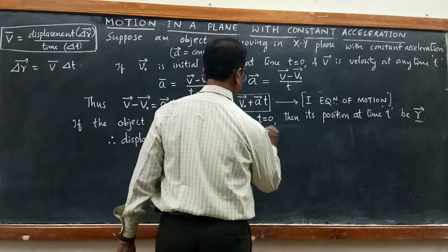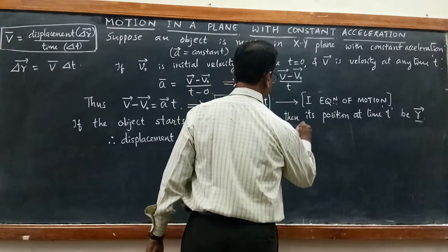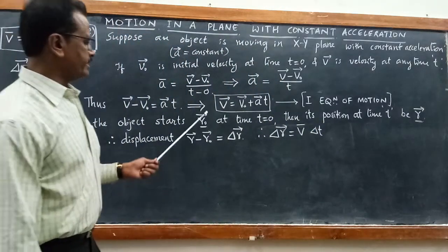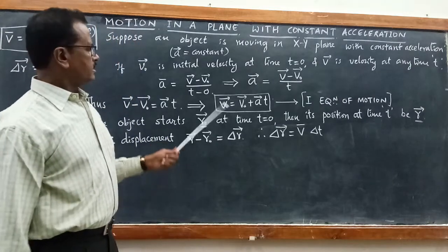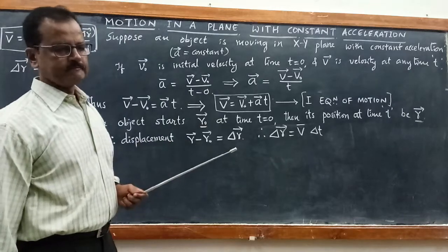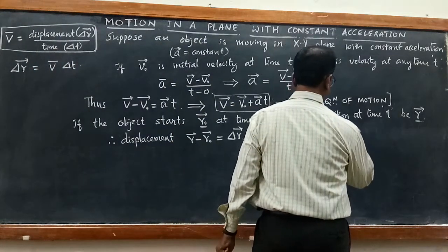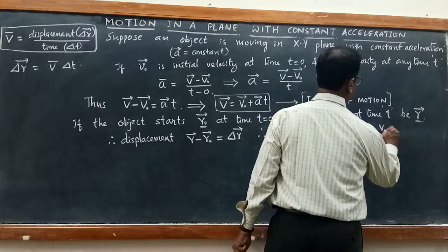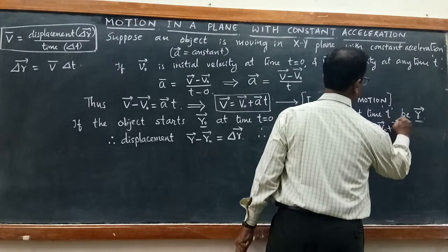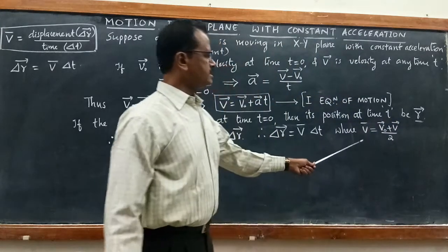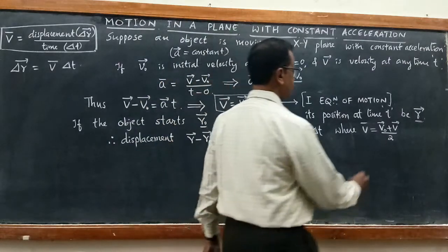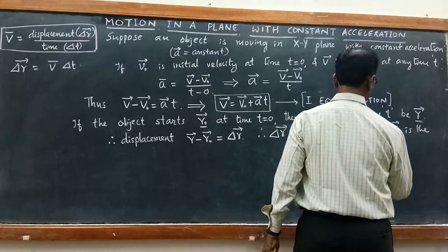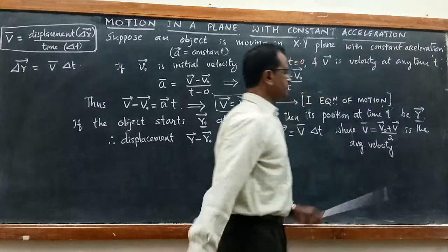So Δr = v̄ · Δt. What is v̄? The initial velocity is v₀ and the final velocity is v, therefore v̄ = (v₀ + v) / 2. This is the average velocity in the interval.